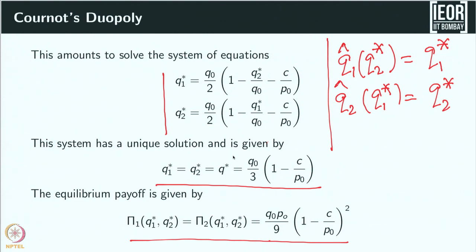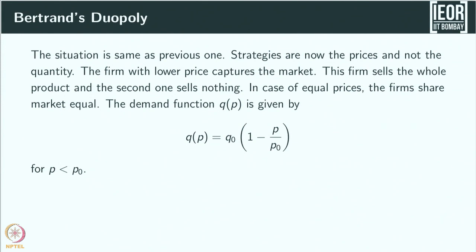This is the Cournot duopoly. The same problem can be extended to multiple firms — an oligopoly. There is also a related model called the Bertrand model, where firms decide the price rather than the quantity. In the Bertrand model, the firm with the lower price captures the entire market; the other sells nothing. In case of equal prices, they share the market equally. The demand function is Q(P) = Q_0 * (1 - P/P_0).